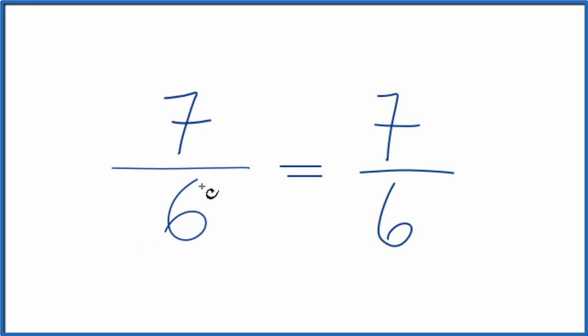Do note that 7 over 6 is an improper fraction because the numerator, the 7, is larger than the denominator, the 6.